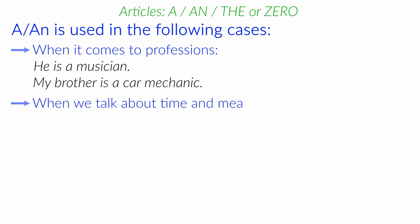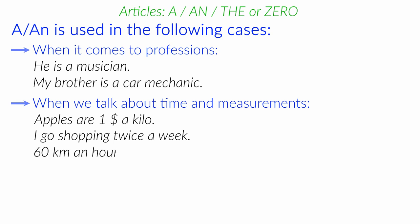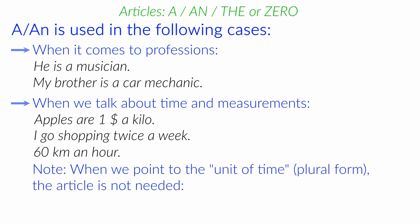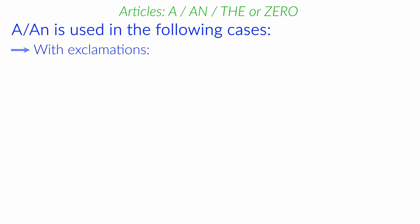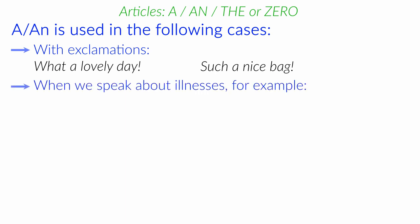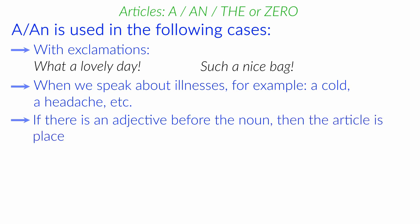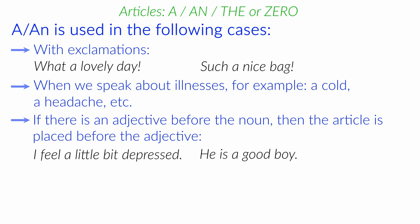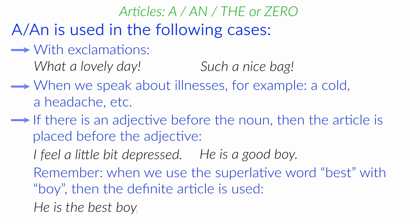When we talk about time and measurements. Apples are $1 a kilo. I go shopping twice a week. 60 kilometres an hour. But when we point to the unit of time, plural form, the article is not needed. For example, I go shopping every two weeks. The indefinite article is used with exclamations. What a lovely day! Such a nice bag! When we speak about illnesses. For example, a cold, a headache, etc. If there is an adjective before the noun, then the article is placed before the adjective. I feel a little bit depressed. He is a good boy. But remember, when we use the superlative word best with boy, then the definite article is used. He is the best boy I ever met.